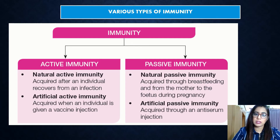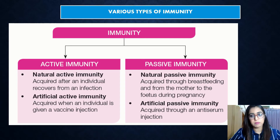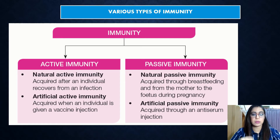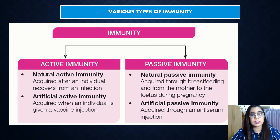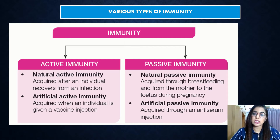Natural active immunity is acquired after an individual recovers from an infection. Artificial active immunity is acquired through vaccine injection. Natural passive immunity is acquired through breastfeeding or from the mother during pregnancy. Artificial passive immunity is acquired through anti-serum injection.